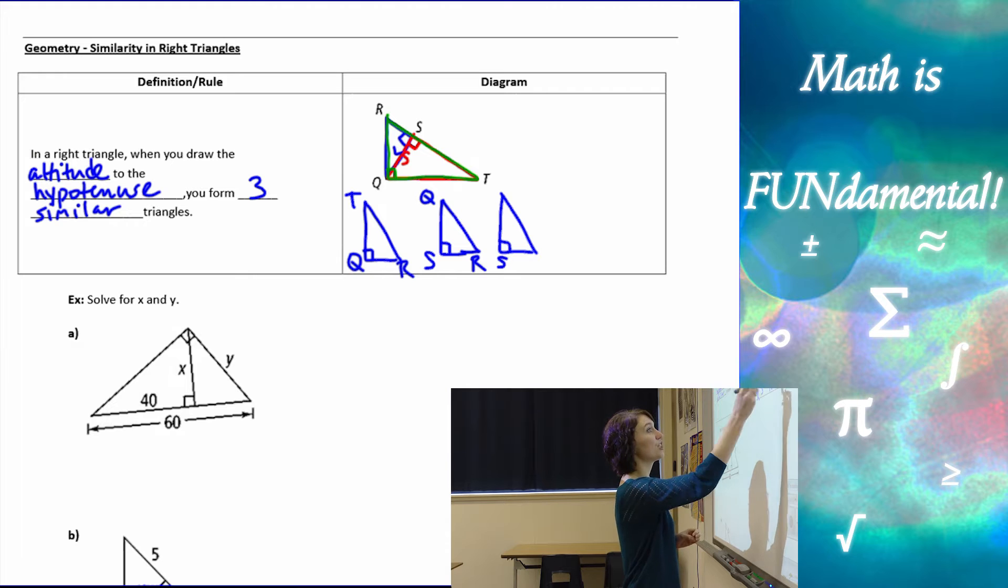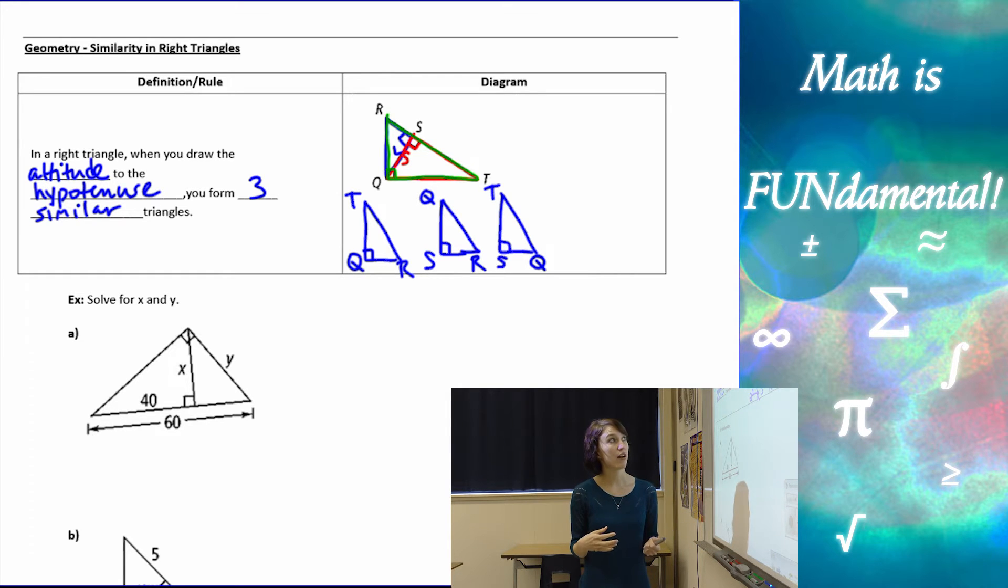I'm going to have S here, SQ is going to be my short side now, and then ST is my long side. So there are my three triangles oriented the same direction, so I can see which sides correspond to each other easily.